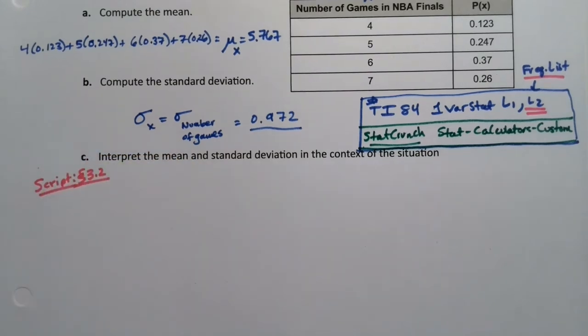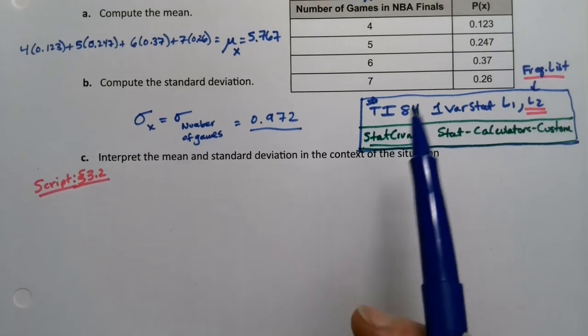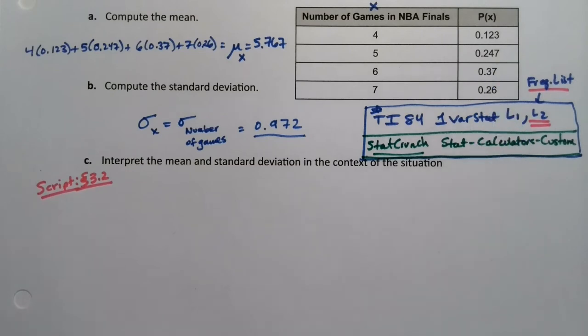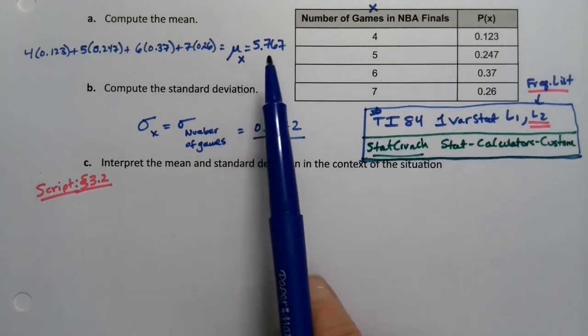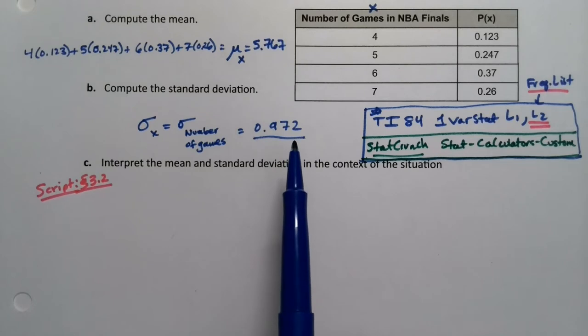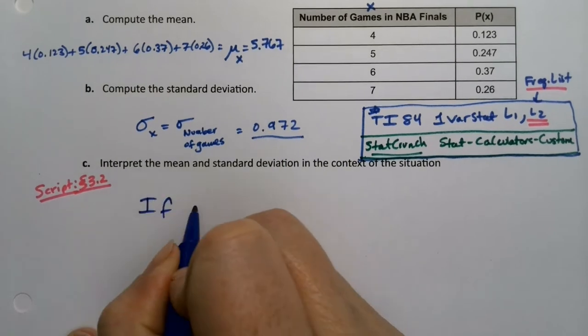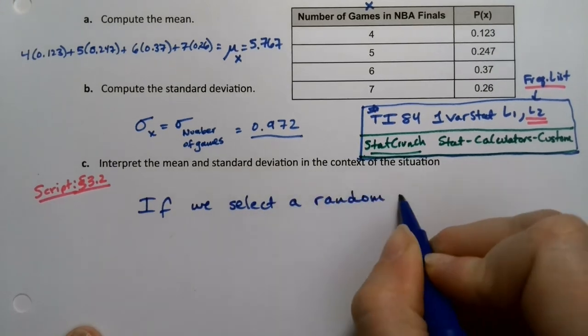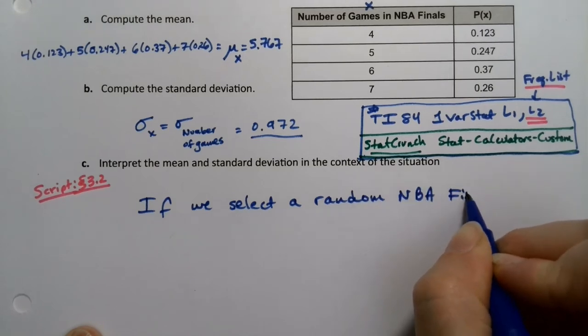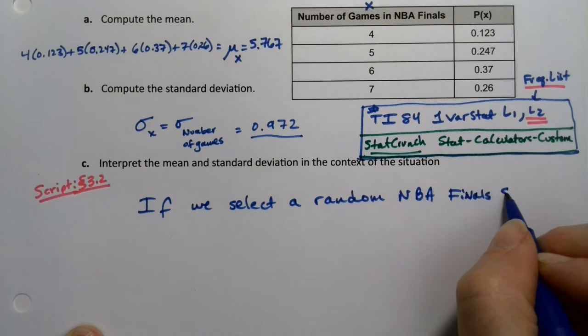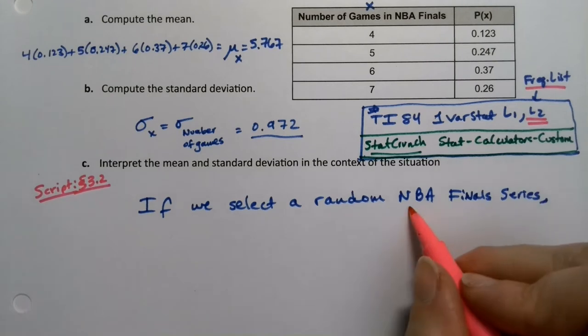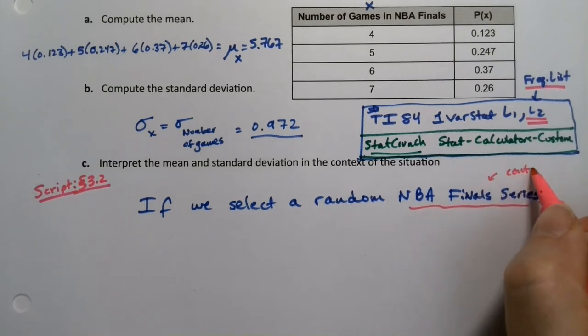So you'd want to go find that, which basically says, hey, if we were going to go pick a random NBA Finals series, we expect—I see, there's that word, we expect—it to last 5.767 games, give or take 0.972 games. Okay, so let me write that up. If we select a random NBA Finals series, right, there's the context. That's important because we have to talk about what we're talking about. In this case, it's the NBA Finals.